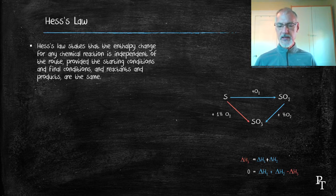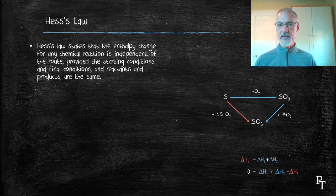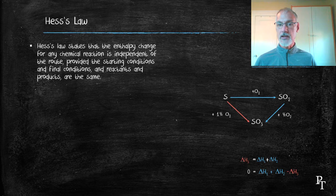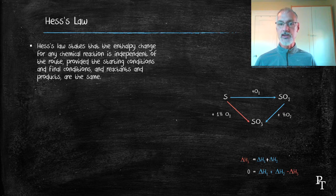Negative delta H3 means I would be going in the other direction. The red arrow would be pointing from sulfur trioxide up to sulfur itself. That would thereby complete the cycle, arriving and finishing at sulfur.